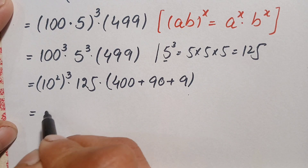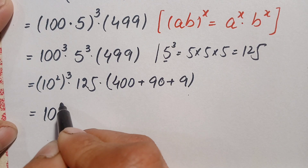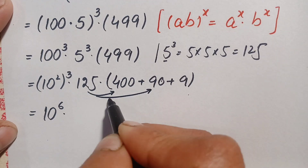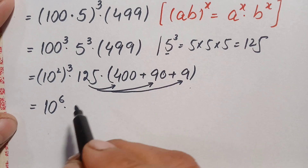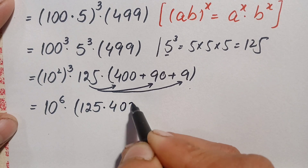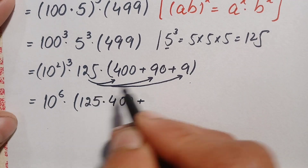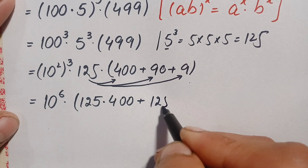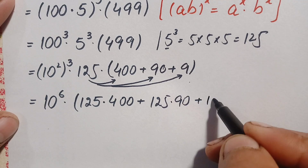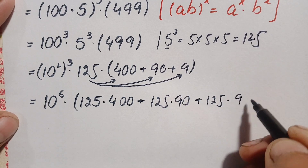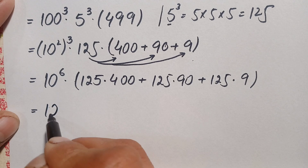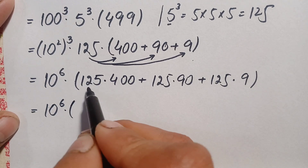Using the exponential identity, we multiply the powers: 10 to the power 2 times 3 equals 10 to the power 6. So the expression becomes 10 to the power 6 times 125 times (400 plus 90 plus 9). We now multiply 125 by 400, then by 90, and then by 9.